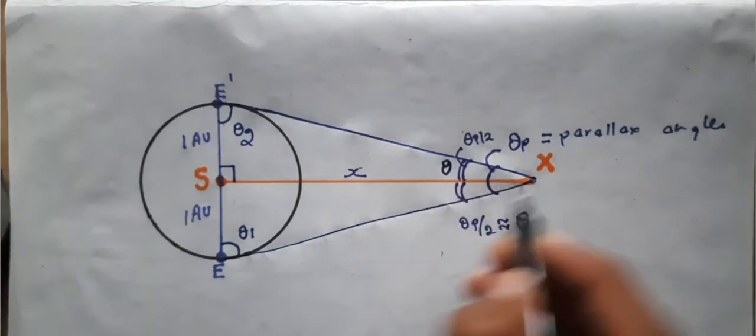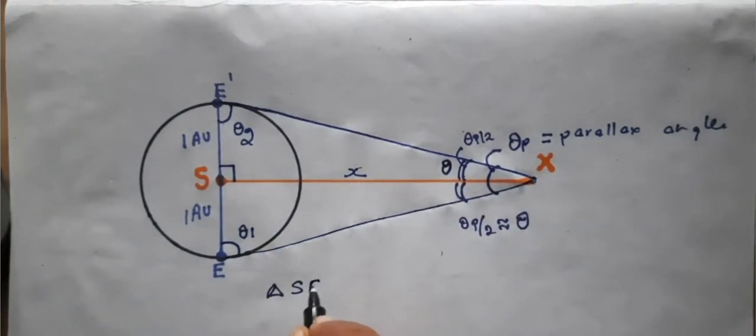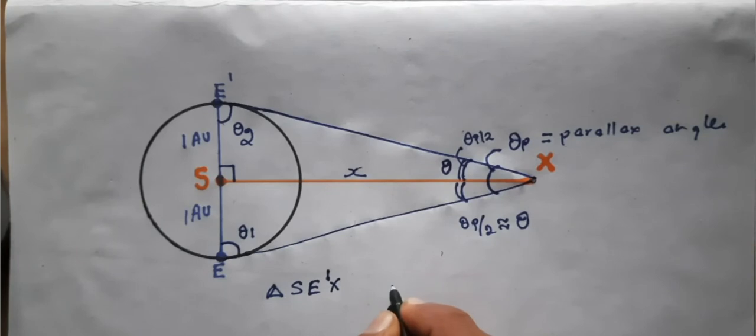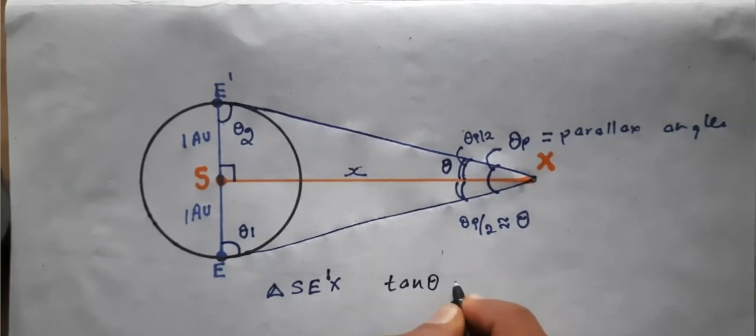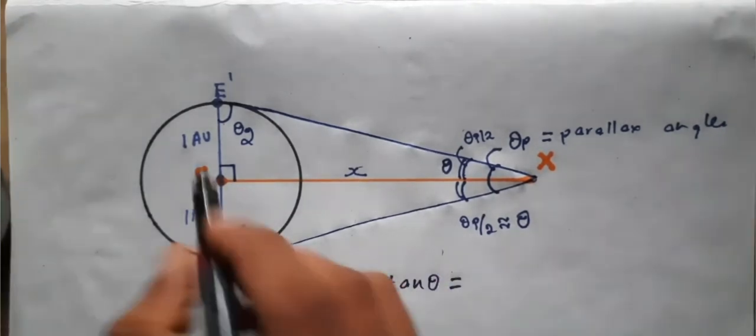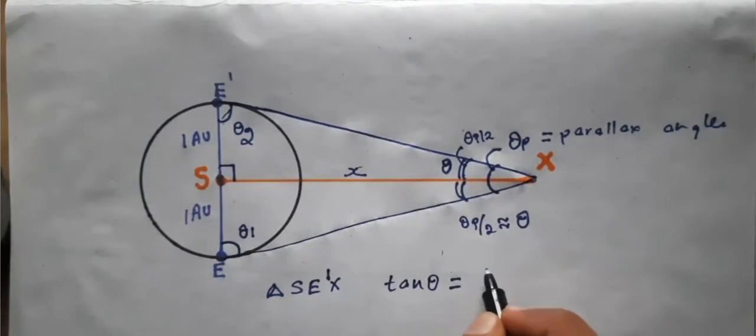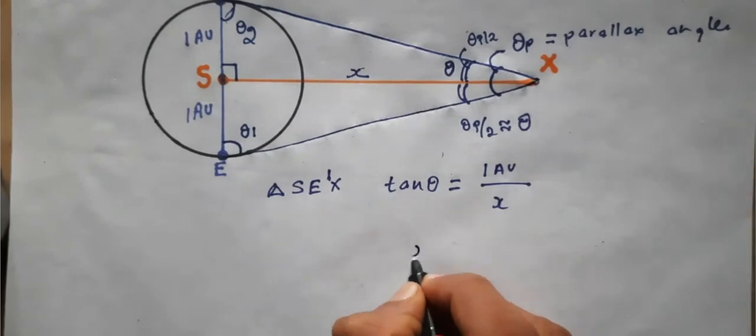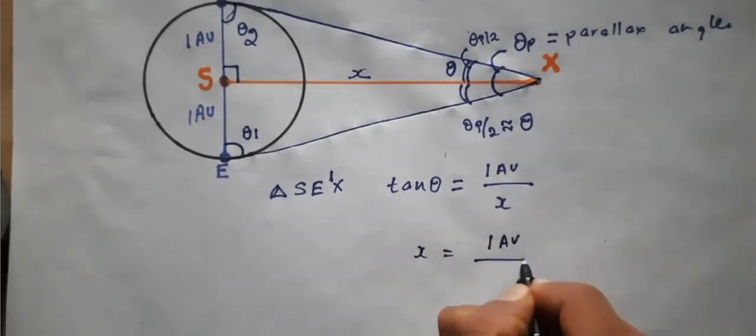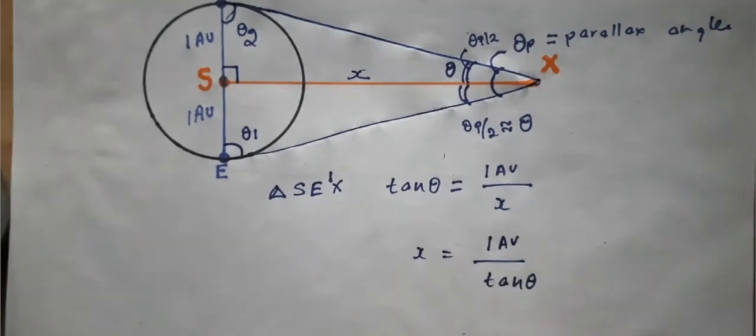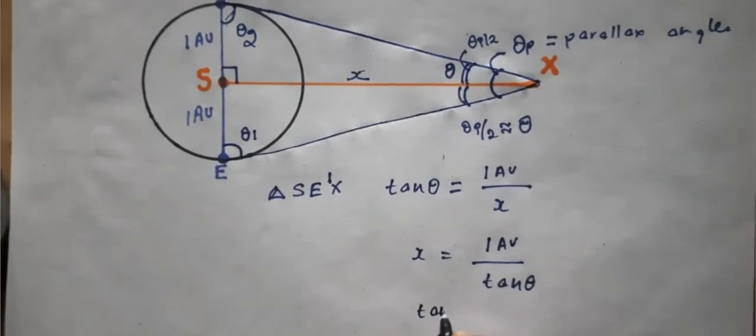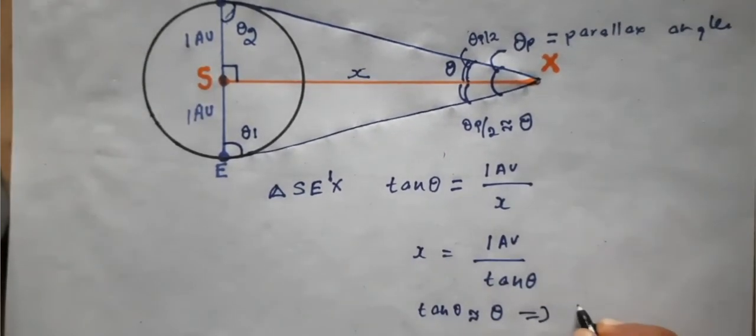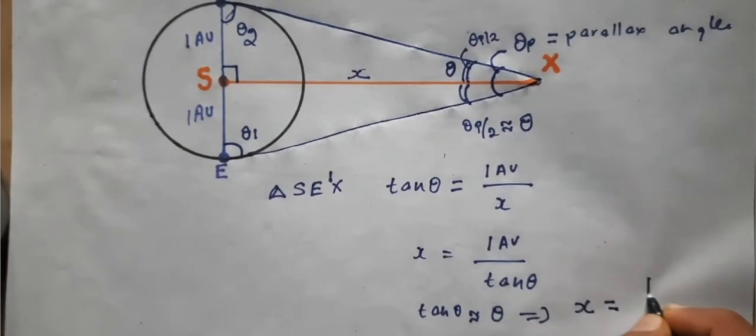Now, in the triangle SE'X, tan θ is equal to opposite side divided by adjacent, that is, 1 AU by x. My aim is to determine x, so x is equal to 1 AU by tan θ. For smaller angles, tan θ is nearly equal to θ, which implies x is equal to 1 by θ.